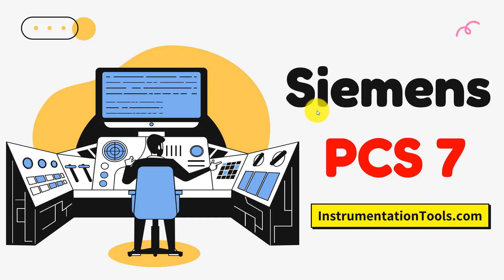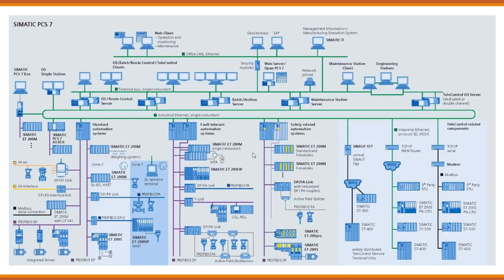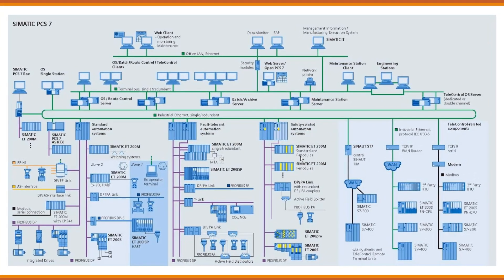A short note on all the components that exist in PCS7. So let's get diving. As you remember, this is a typical architecture of PCS7 in industrial control. We discussed about the scalability and approach of how field devices communicate to the control room through PCS7. The major components used in PCS7 are as follows.